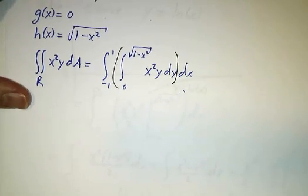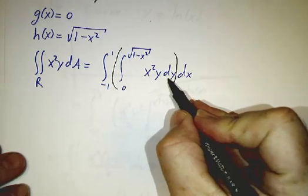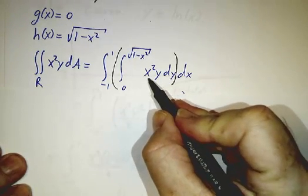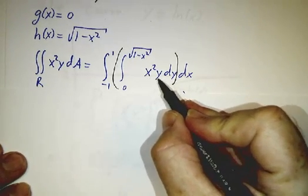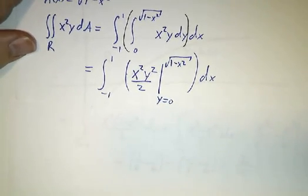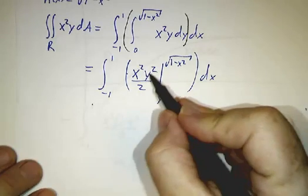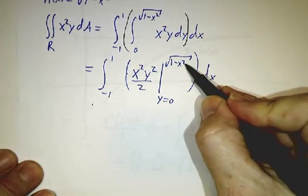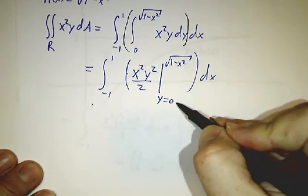So let's do that first integral. The integral of x squared y dy, you treat x just like a constant, so that's x squared y squared over 2. So we have to plug in what happens x squared y squared over 2 when y equals root 1 minus x squared and when y equals 0.